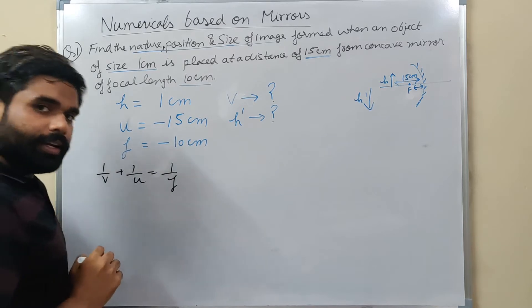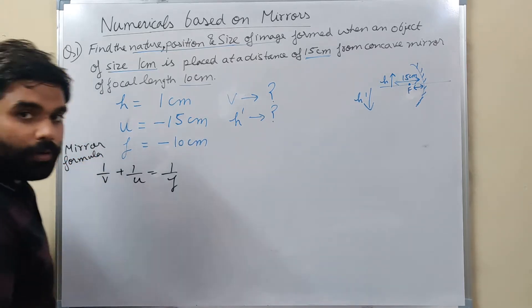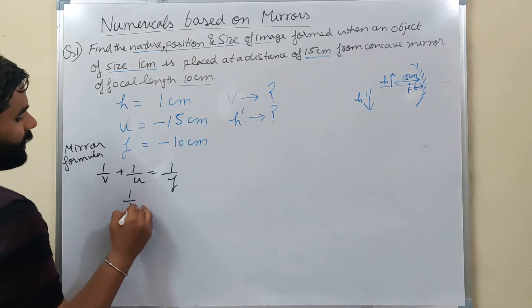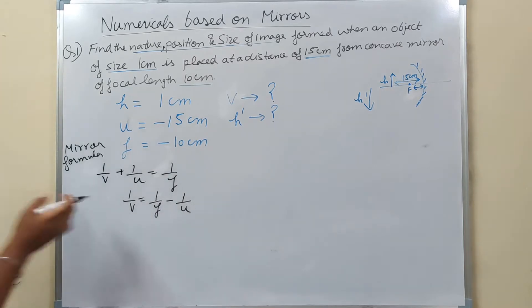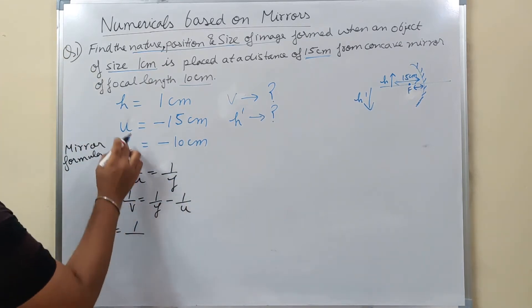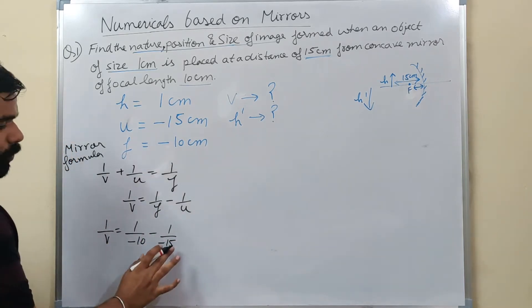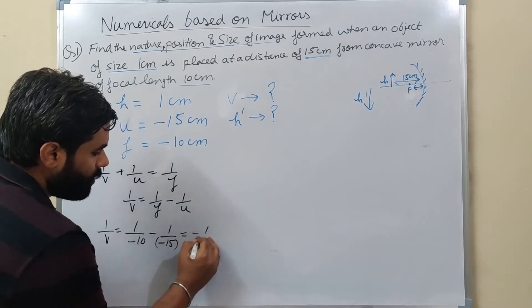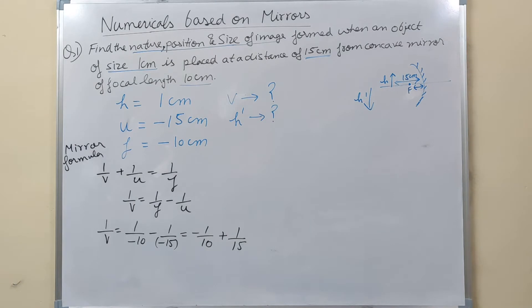This is the mirror formula - everyone knows it. 1/V + 1/U = 1/F. I need to find V, so I take U to the other side: 1/V = 1/F - 1/U. Now putting values: F is -10 cm, U is -15 cm. So 1/V = -1/10 + 1/15.